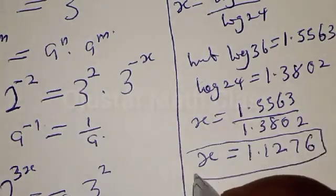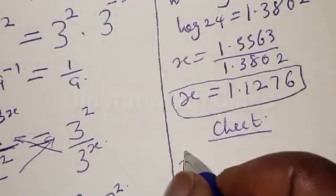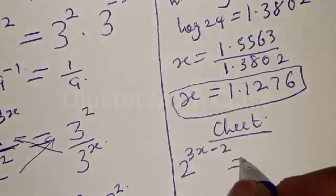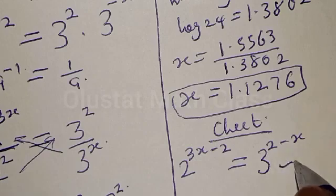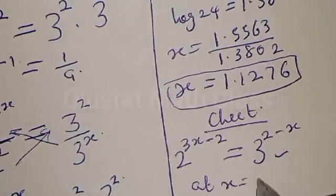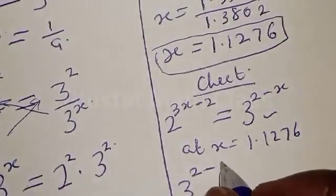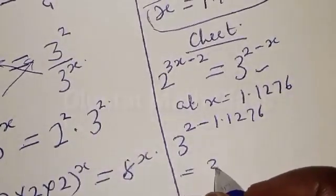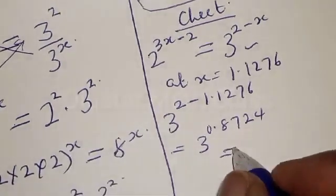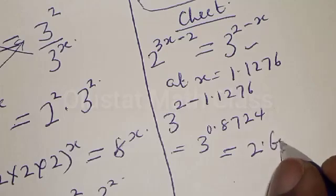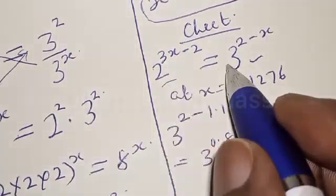This is our final answer. Now let's check to confirm our answer. We have the given equation: 2 raised to power 3x minus 2 must equal 3 raised to power 2 minus x. Let's consider the right hand side first, with x equal to 1.1276. We have 3 raised to power (2 minus 1.1276), which is 3 raised to power 0.8724, and that equals approximately 2.608.